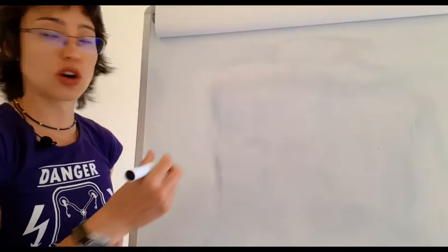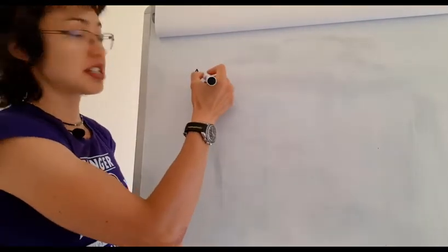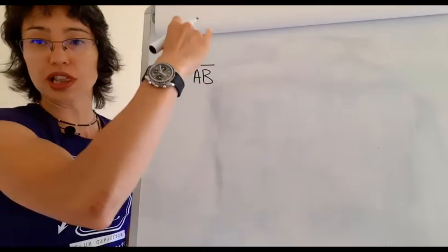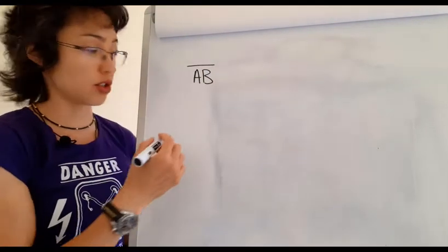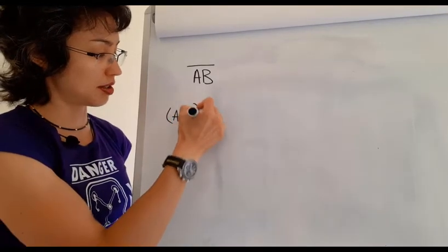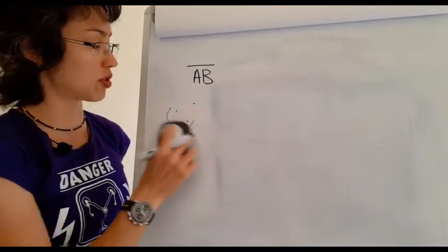The final two rules that you need to know about are known as De Morgan's Laws. This is where the notation where you use a line to denote a NOT or an inverted symbol is better than where you use an apostrophe if you're more used to using an apostrophe.